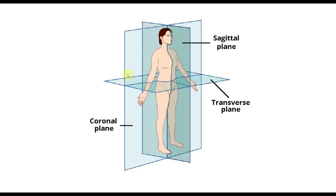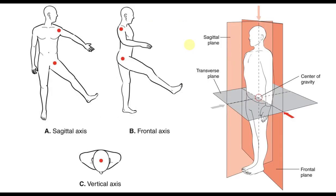There is a fourth plane referred to as the diagonal or oblique plane. It describes movement that does not occur in one of the three primary planes. There are infinite combinations of that particular plane — so if it's not the coronal, not the transverse, not the sagittal, and it's going at an angle, it's the diagonal or oblique plane.